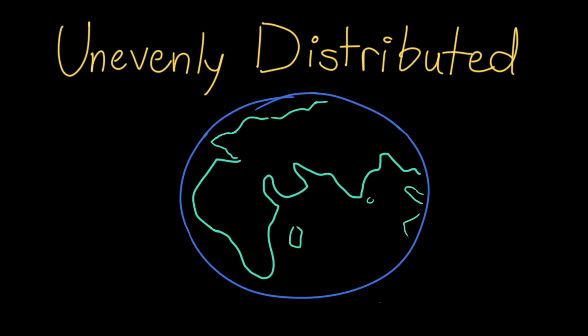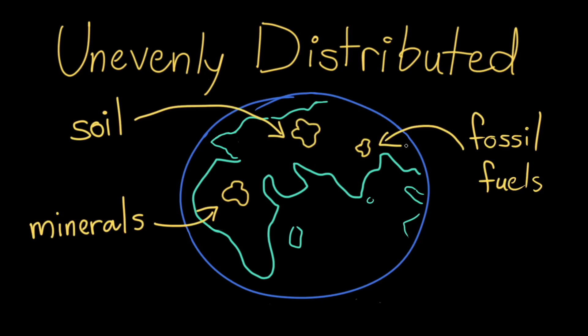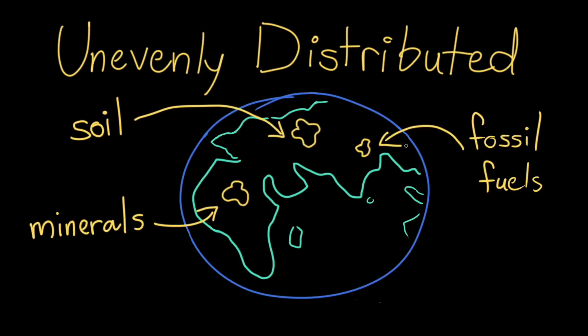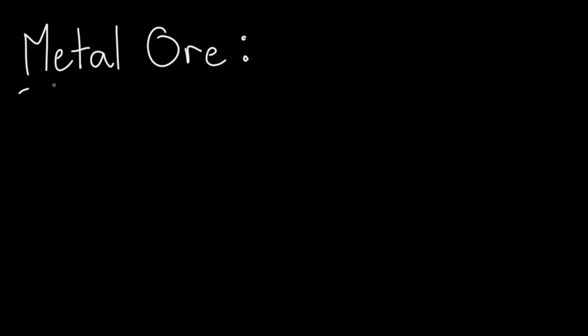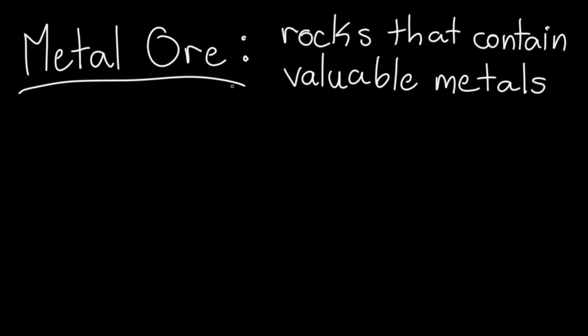As a result, non-renewable resources, like soil, minerals, and fossil fuels, are often concentrated in the places where they first formed. Let's take a look at one type of non-renewable resource: metal ore. Metal ores are rocks that contain valuable metals that people can extract, and they're often found in large accumulations called deposits.